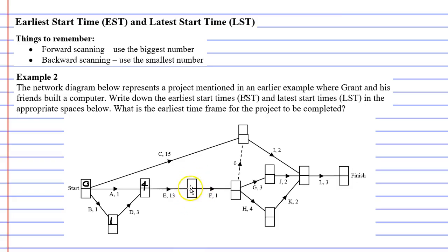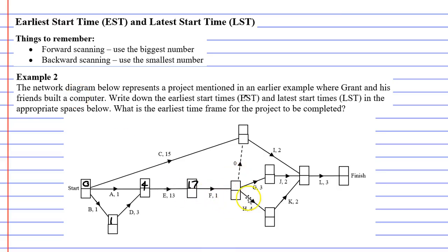Activity E takes 13 minutes and cannot start until four minutes into the project. Four plus 13 gives us 17 for our next vertex. Then moving on to the next vertex, activity F only takes one minute. 17 plus one gives us 18.